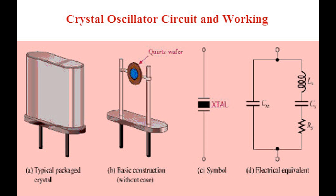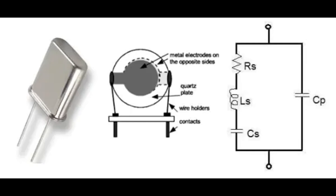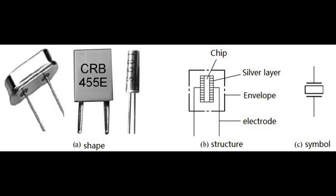Overall, frequency control plays a vital role in ensuring the accurate operation of electronic systems across a wide range of applications, from consumer electronics to advanced communication and measurement systems. Crystal oscillators play a crucial role in modern electronics by providing stable and accurate timing signals. Their precision and reliability make them indispensable components in many electronic systems. By harnessing the piezoelectric properties of the quartz crystal and creating a feedback loop that sustains oscillations at the crystal's resonant frequency, a crystal oscillator produces a highly stable and accurate electrical signal serving as a precise timing reference in various electronic devices and systems.